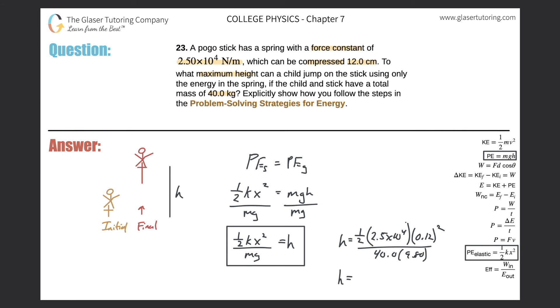Now all we have to do is plug it into the calculator. So 0.5 times 2.5 times 10 to the 4, times 0.12 squared, divided by 40 times 9.8. And it works out to be a height of 0.459 meters. So just about a half a meter.